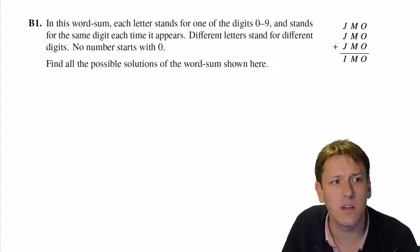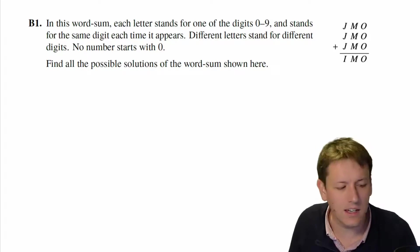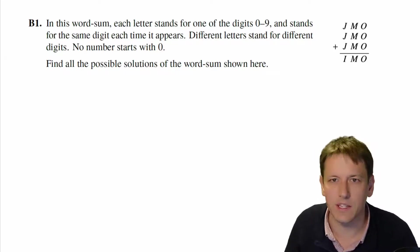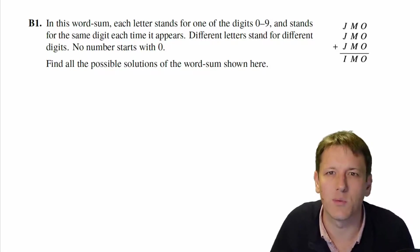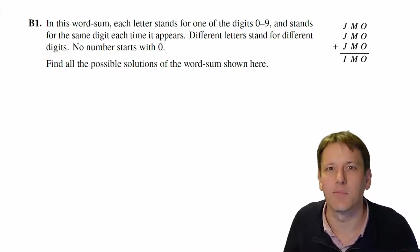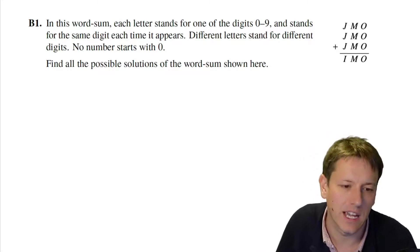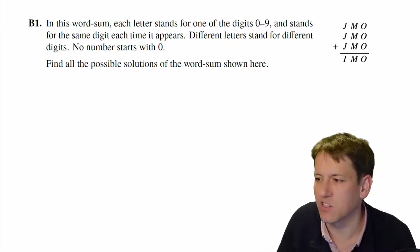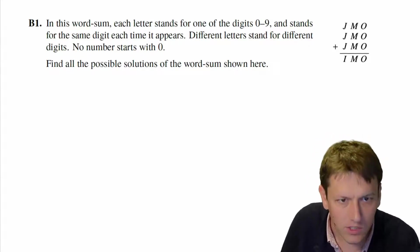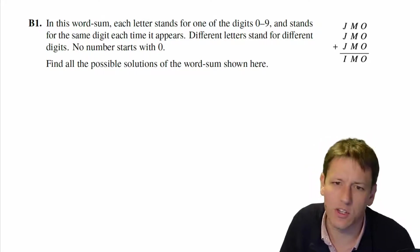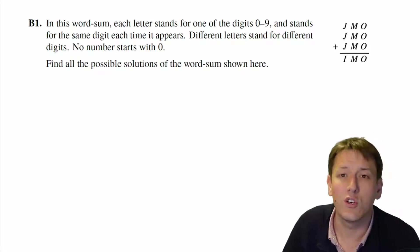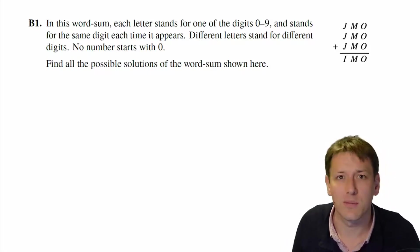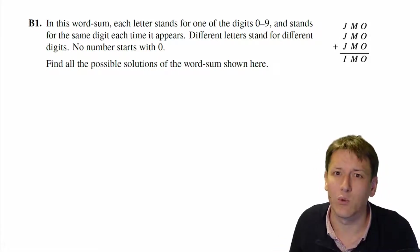In Section B questions for the Olympiad we also have to make sure we set out our working clearly. Just as a word of warning, in these solutions you might want to write things out a little bit more in full sentences than I do here. The best way to approach word sums or products is usually to approach them in the same order that you would think about doing an ordinary addition.